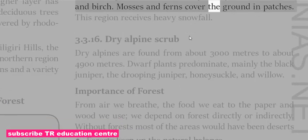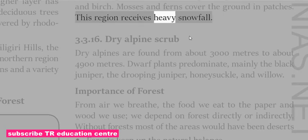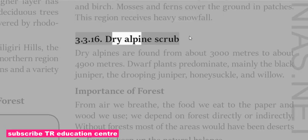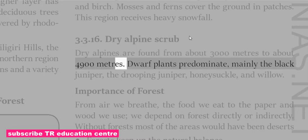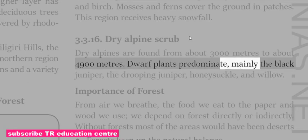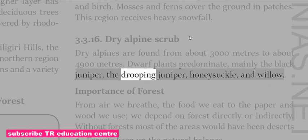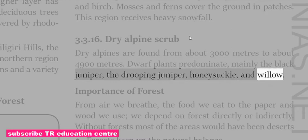Moist Alpine Scrub is found all along the Himalayas and on the higher hills near the Myanmar border. It has a low scrub dense evergreen forest consisting mainly of rhododendron and birch; mosses and ferns cover the ground in patches. This region receives heavy snowfall. Dry Alpine Scrub is found from about 3,000 meters to about 4,900 meters, where dwarf plants predominate, mainly black juniper, drooping juniper, honeysuckle and willow.